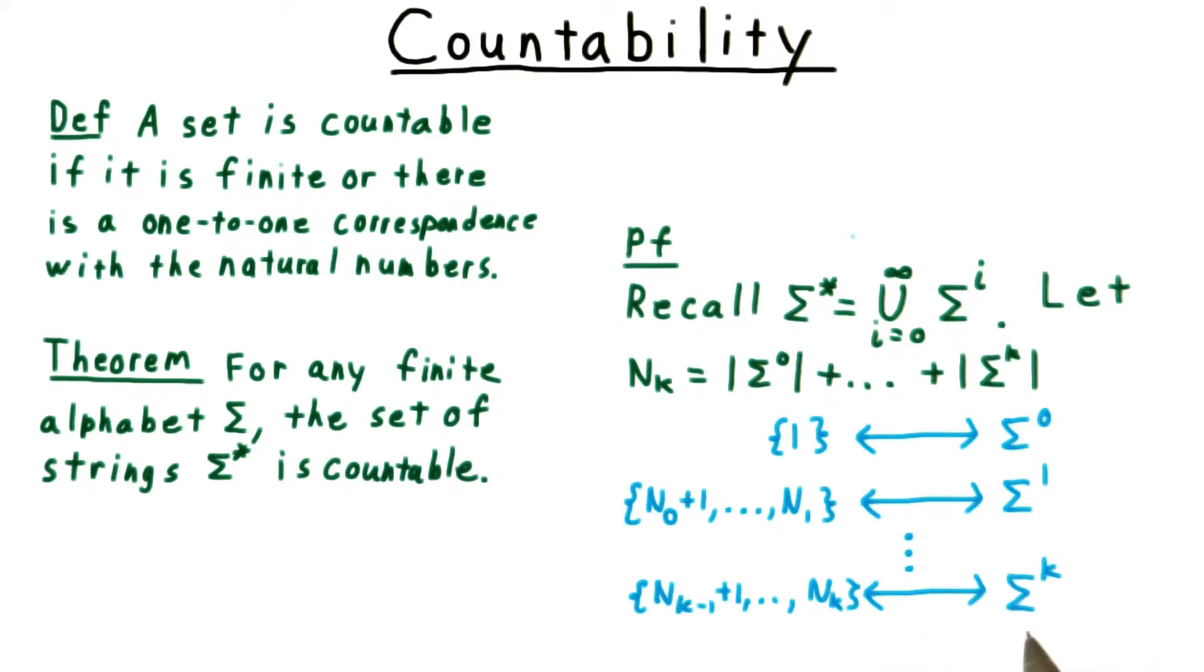Within each one of these arrows, you can do the correspondence in any way. Lexicographic order is as good as any. For example, we can enumerate all the strings over the binary alphabet like this.